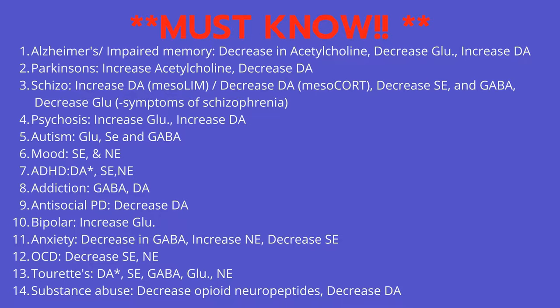Number nine: Antisocial personality disorder — decreased dopamine. Number ten: Bipolar disorder — increased glutamate. Number eleven: Anxiety — decreased GABA, increased norepinephrine, and decreased serotonin. Number twelve: OCD — decreased serotonin and impaired norepinephrine. Number thirteen: Tourette's — impairments in dopamine, serotonin, GABA, glutamate, and norepinephrine.